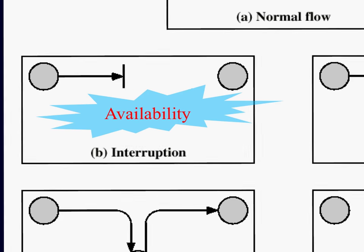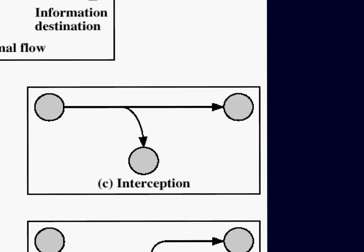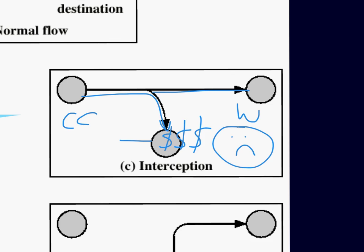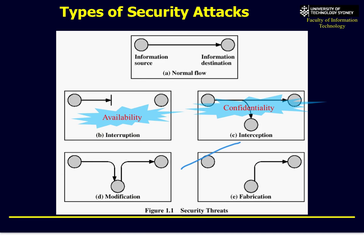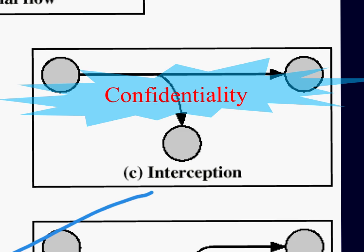Another type of attack is interception. You enter your credit card and send it to a website, but somebody makes a copy — and you suddenly find your credit card is out of money. That's a confidentiality attack: somebody has sniffed your web connection and grabbed your credit card.